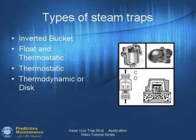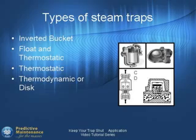There are four common types of steam traps, and all work to remove impurities from the steam system. The four types are known as inverted bucket, float and thermostatic, thermostatic, and thermodynamic or disk. Traps work on one of three operative modes: a change in density, a change in temperature, or a change in velocity.